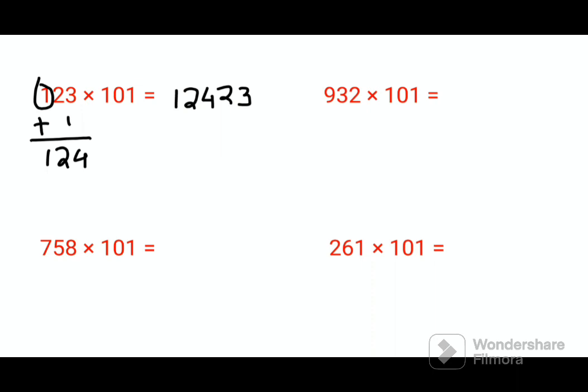Now let's see what happens when you have to multiply 758 into 101. So 58 is written as it is, and then you just add 7 to the whole thing. When you add 7 to 758, your answer comes out to be 765, and your final answer is 76558.